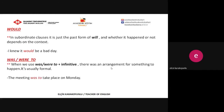The second form is 'was or were to.' When we use 'was or were to' plus the infinitive form of the verb, it means there was an arrangement for something to happen. It's usually formal. For example: 'The meeting was to take place on Monday.'